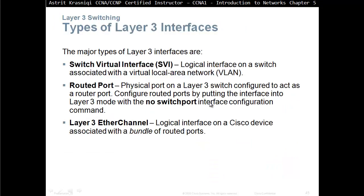Types of layer 3 interfaces. The major types are: switched virtual interface (SVI) — a logical interface on a switch associated with a VLAN. On a layer 2 switch, you can configure one SVI such as VLAN 1 or VLAN 99 for management. On a layer 3 switch, you can create as many virtual interfaces as you want — each VLAN can have its own virtual interface. So you create VLAN 10, VLAN 20, VLAN 30 and so on, each with a switch virtual interface.